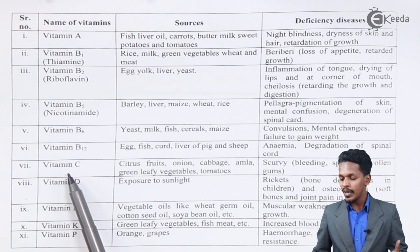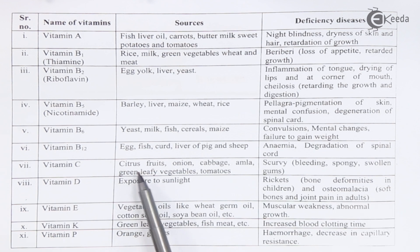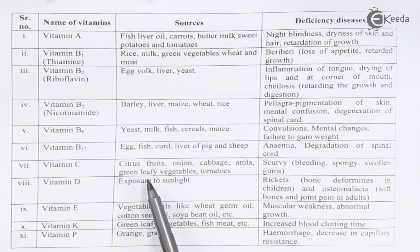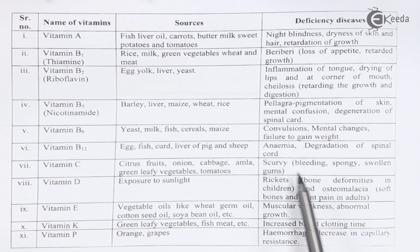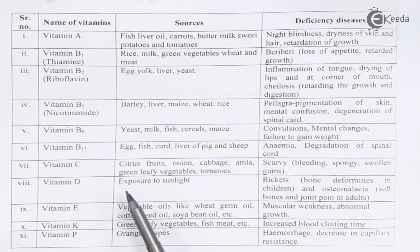Vitamin C is present in citric foods, onions, cabbage, amla, green leafy vegetables, and tomatoes. The disease caused by its deficiency is scurvy.